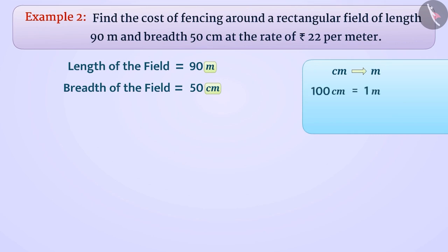We know that 100 cm is equal to 1 meter. So 50 cm is equal to 50 divided by 100 meter, which is equal to 0.5 meter.